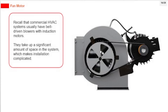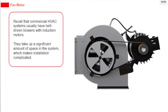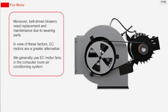Commercial HVAC systems usually have belt driven blowers with induction motors. They take up a significant amount of space, making installation complicated. Belt driven blowers also need replacement and maintenance due to wearing parts. In view of these factors, EC motors are a greater alternative, and we generally use EC motor fans in the computer room air conditioning system.